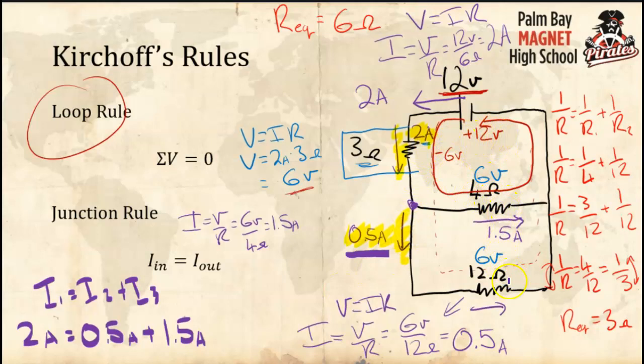Now we have everything we need — the voltage, current, and resistance for each resistor. You could also calculate power using P = V × I. That's how you solve these more complicated circuit problems. I hope this helped, and we'll talk in class about when this worksheet is due.